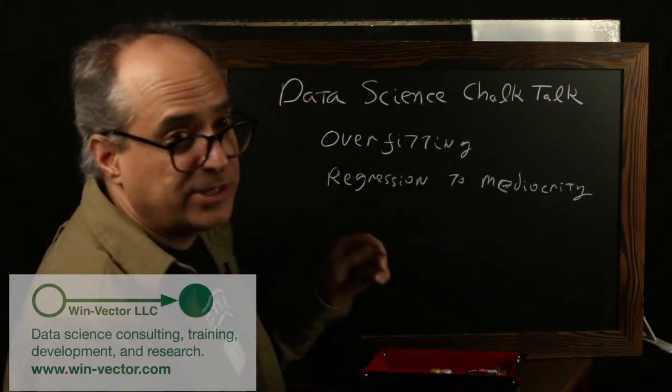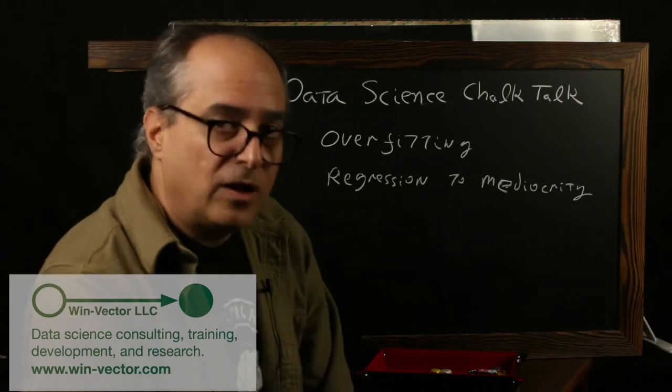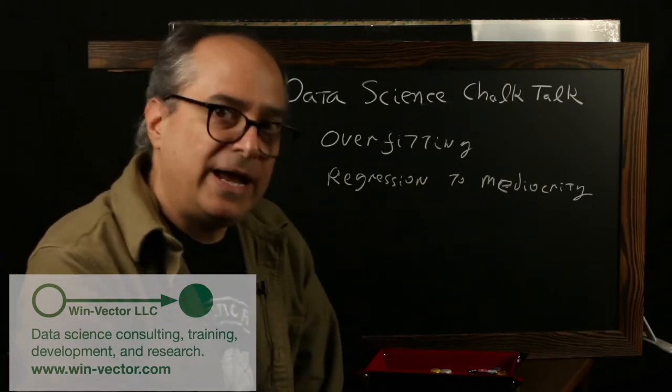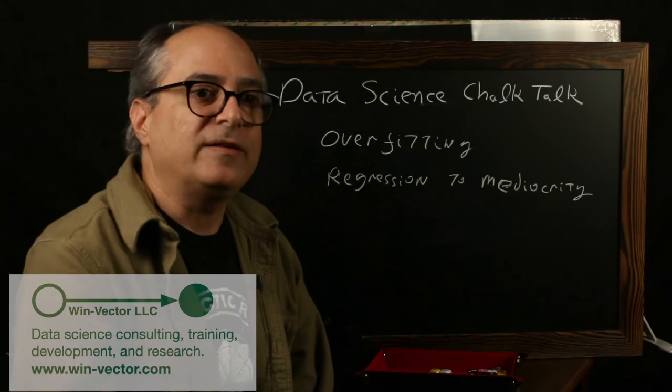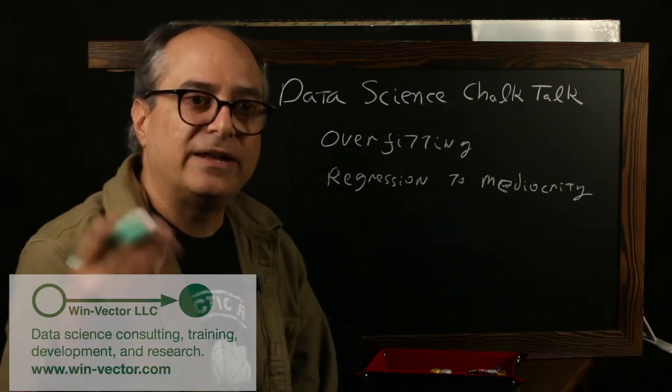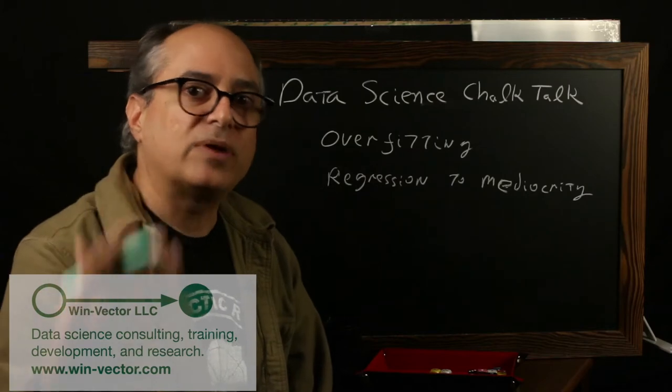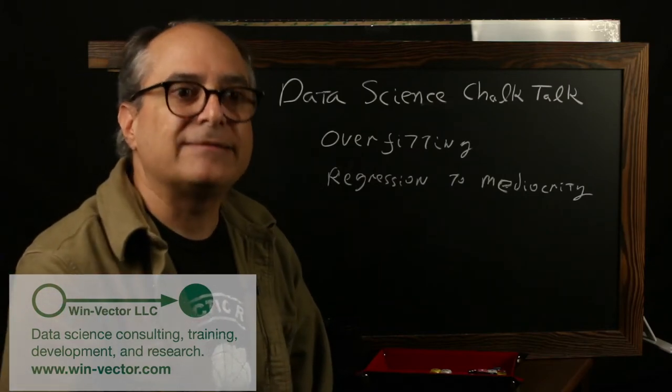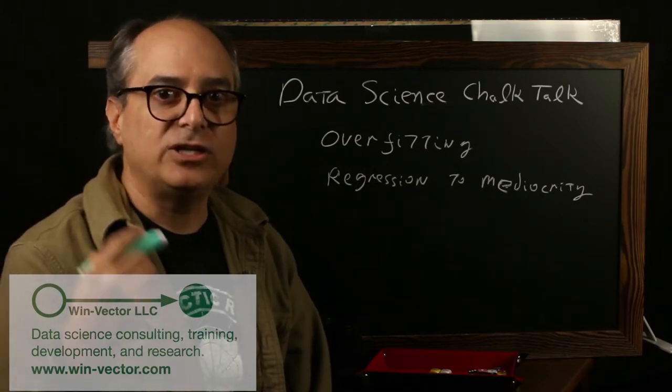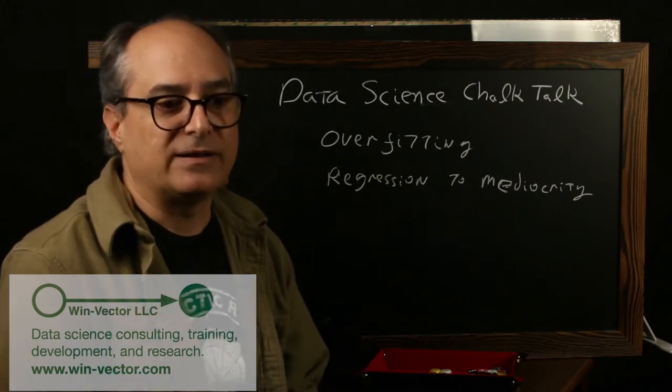Also called regression to the mean. So overfitting or regression to mediocrity is what happens when your model learns things about your training data that are not true in general. So basically your model decides to impress you on your training data. It gets lucky on your training data, achieves things on the training data that it will not be able to do in practice.